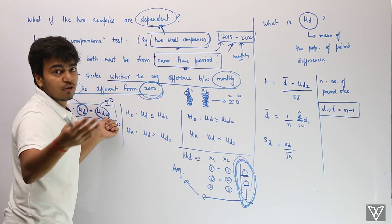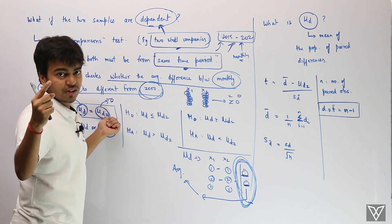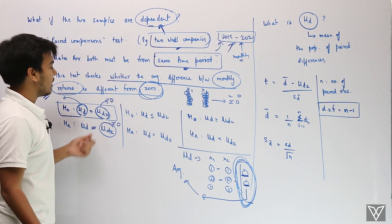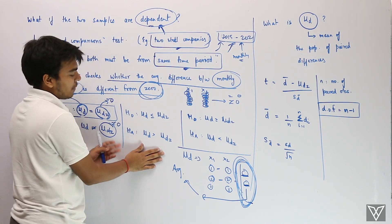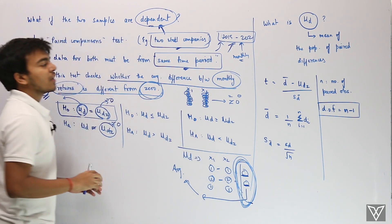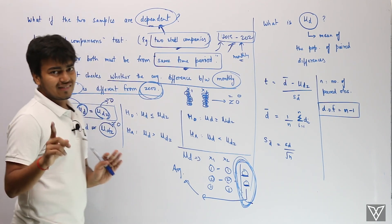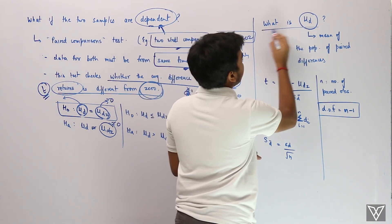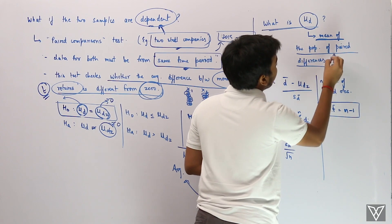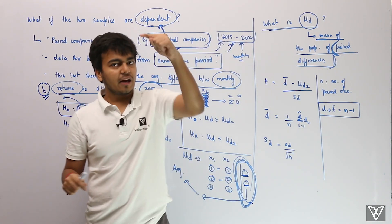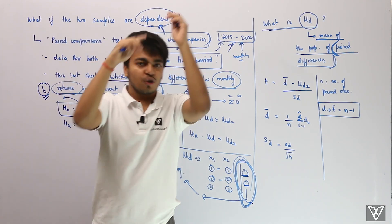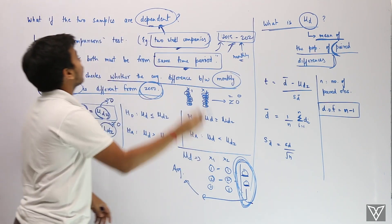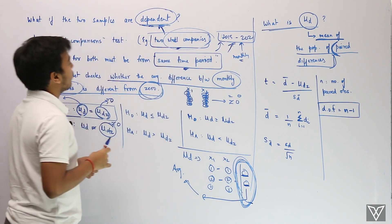Mu_dz is the hypothesized value — in most cases mu_dz equals zero. Mu_dz is defined as the mean of the population of pair differences. Whenever the series are dependent, we always go for the pair differences, or pair comparisons. Once we have those pair differences, we apply the t-test.